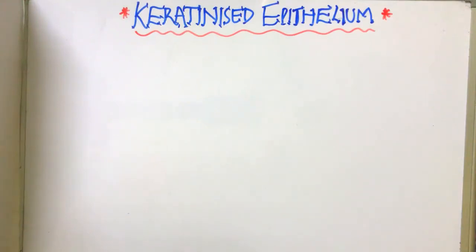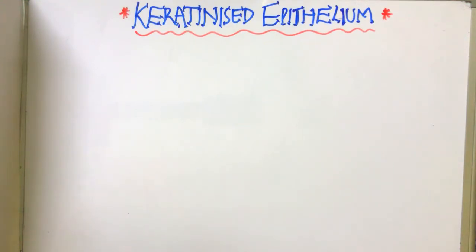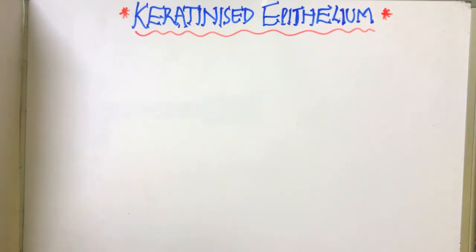Hello guys, welcome back to my channel. Today's topic is keratinized epithelium. In the keratinized epithelium, the keratinocytes are arranged in four cell layers: the basal cell layer, stratum spinosum, granular, and cornified. These are the four cell layers in which the keratinocytes are arranged in the keratinized epithelium.